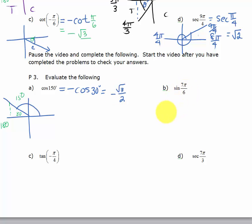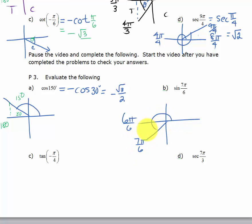The sine of 7π/6: I'm going to draw it. 6π/6 is the same thing as π. When I draw 7π/6, I'm just 1 unit beyond π. So my reference angle is π/6 and I'm in the third quadrant. Using 'all students take calculus,' sine is negative in the third quadrant. My reference angle is π/6, and the sine of π/6 is 1/2. So this would be negative 1/2.